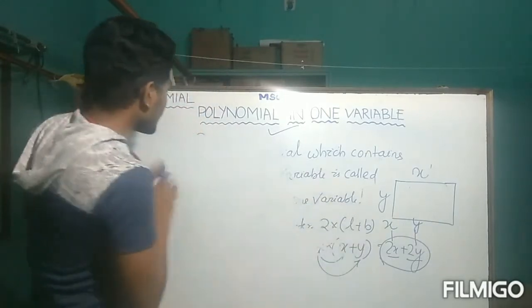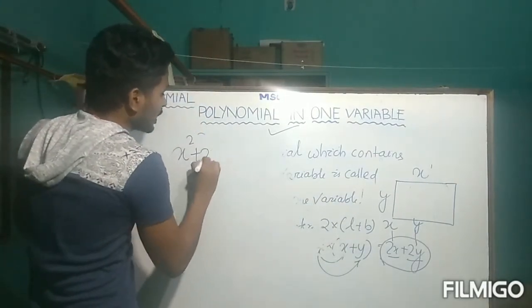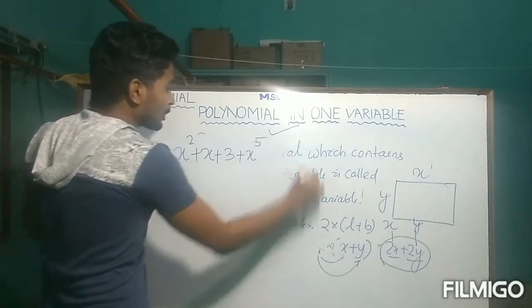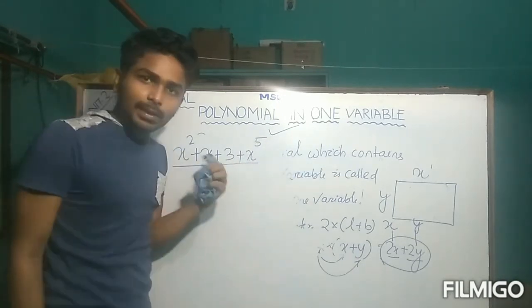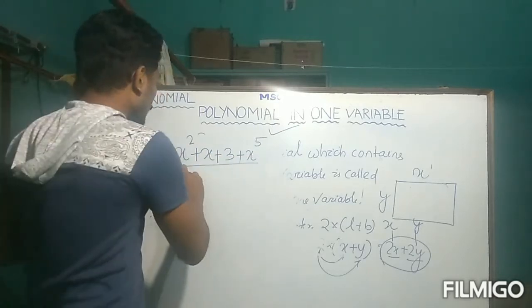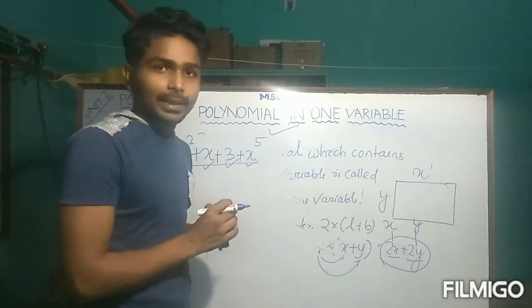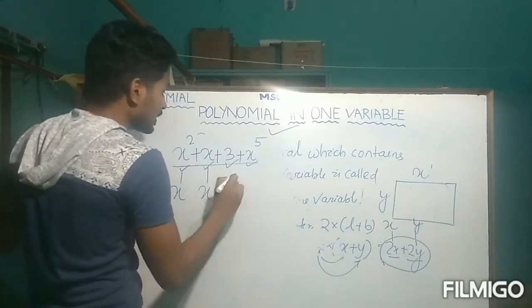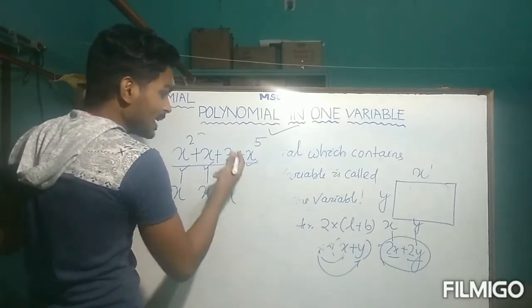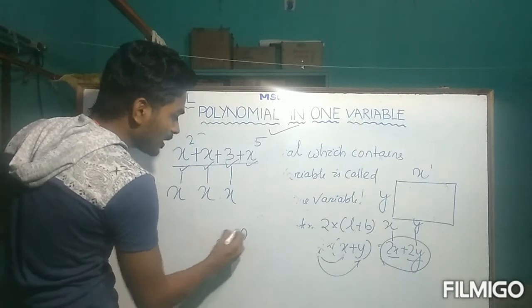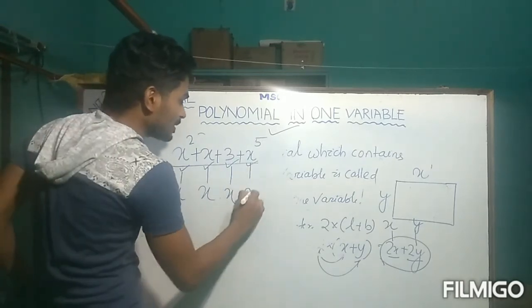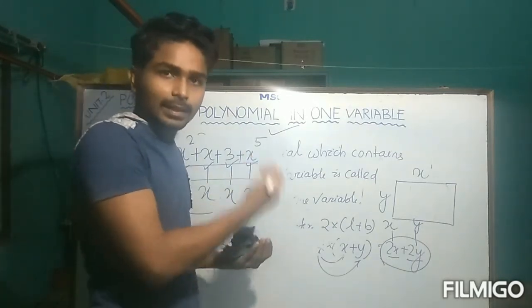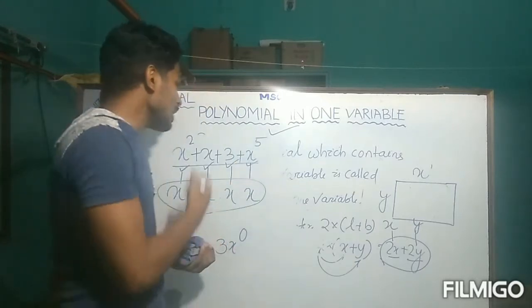One more example: suppose we have X² + X + 3 + X⁵. It is an algebraic expression with four unlike terms. The variable in each term is X. Note that 3 can be written as 3X⁰, so the variable is X here too. Since all four terms have the same variable X, it is a polynomial in one variable.